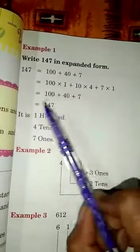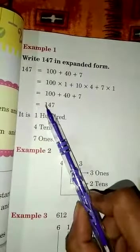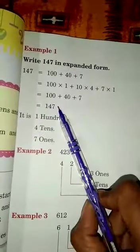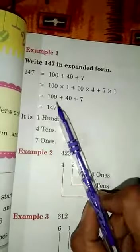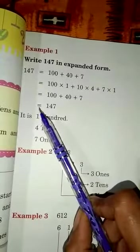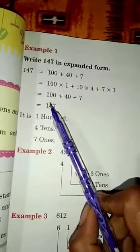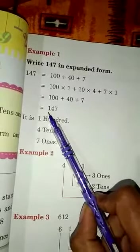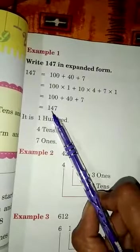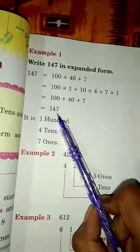So what happened? 147 number will be in result. It is 100, 4 tens, 7 ones.